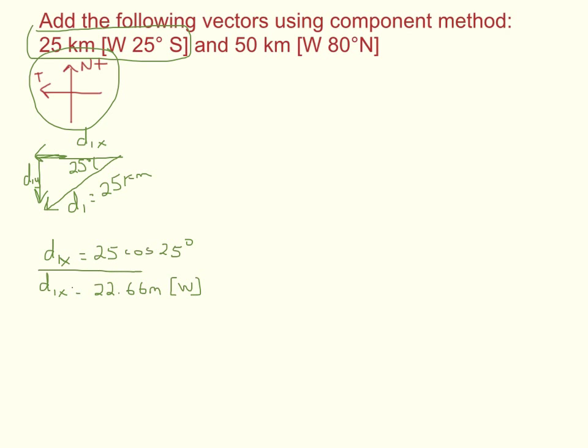Okay, so we need this thing. It's not our final answer. I'm just going to stick a box around it so I can find it again. I also need to solve for D1y. And D1y, if D1x is 25 cos, then this one's going to be sine, 25 sin 25 degrees, and we can go ahead and work that out, and that is 10.57 kilometers, and that one is south.